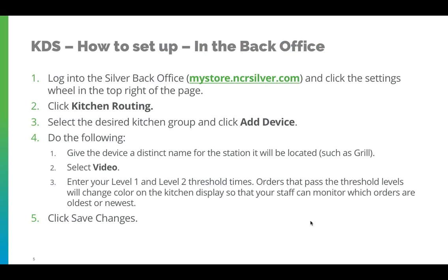Now let's talk about setting up the KDS. First, we need to make sure it's configured correctly within the back office. Log into the back office at mystore.ncrsilver.com and click on the settings wheel at the top right of the page, then click on kitchen routing. Select the desired kitchen group and add a device. Once you add the device, name it, provide the video option, and enter the level 1 and level 2 timing thresholds. Once orders pass through the thresholds, they will change color just as we saw earlier.